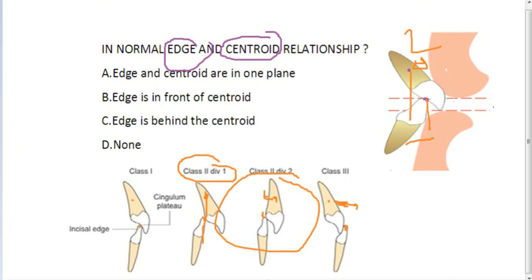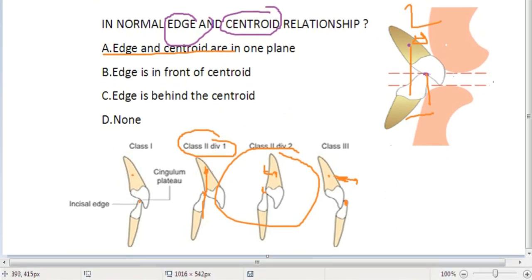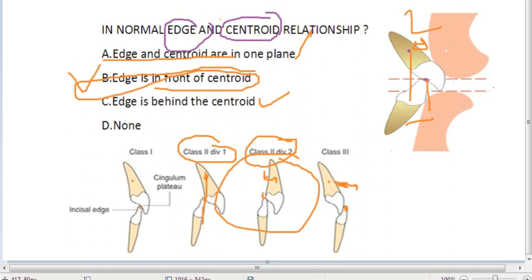Let me come to the question again. In a normal edge and centroid relationship: A - edge and centroid are in one plane? No, this happens in Class 2 div 1. B - edge is in front of centroid? Yes. C - edge is behind the centroid? This happens in Class 2 div 2. This is your normal edge and centroid relationship.